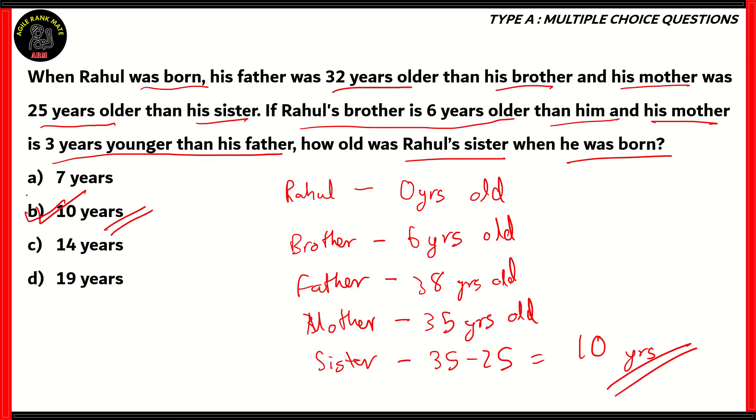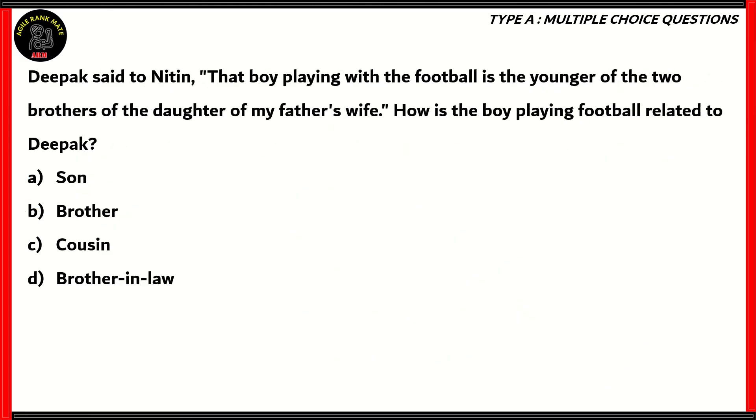So therefore, option B, 10 is the right option. So again, this isn't technically a question on the relation itself, but it uses blood relation in order to calculate ages. Now let's look at another question. This one's particularly using blood relations.